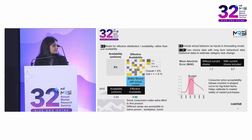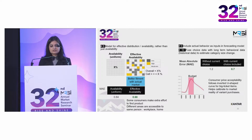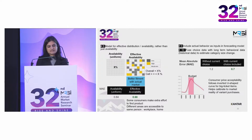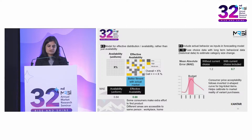Coming to our ninth principle: including actual behavior as inputs in the forecasting model also really helps. If you include recent purchase data in FMCG and consumers' budget range for large-ticket items, it will help you get results closer to reality.